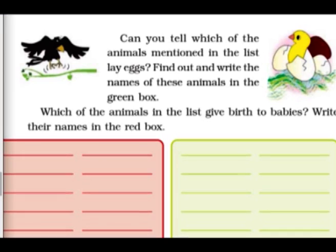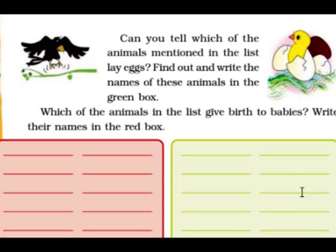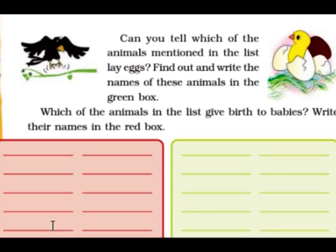From the above, we have to write the names of animals that lay eggs — write it in the green box. Hen lays egg, frog lays egg, crow lays egg, sparrow, peacock, lizard, pigeon, duck — they lay eggs. Animals that give birth to babies, write in the red box: fox, mouse, elephant, cat, camel give birth. Buffalo, pig, and cow also give birth to a baby.